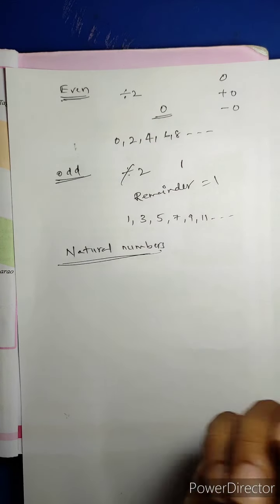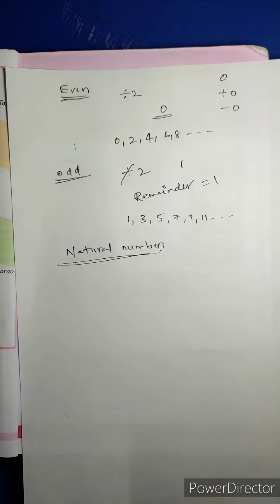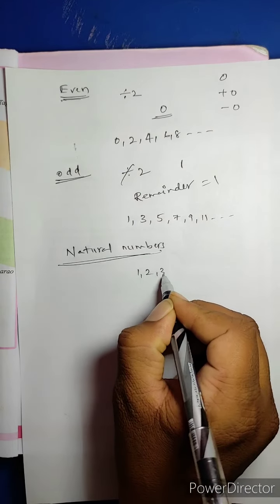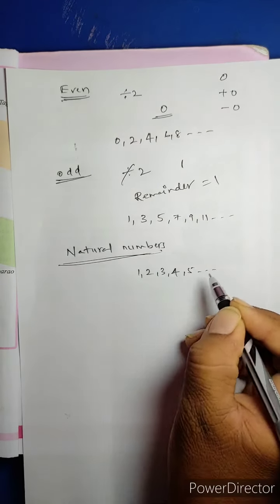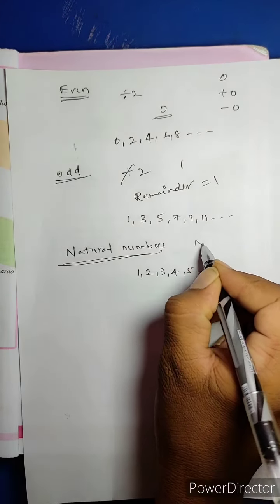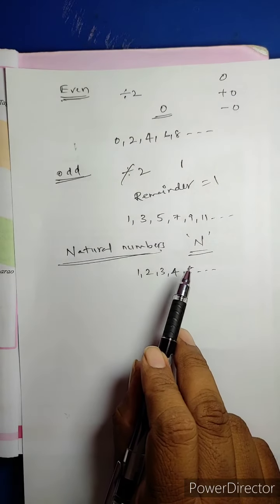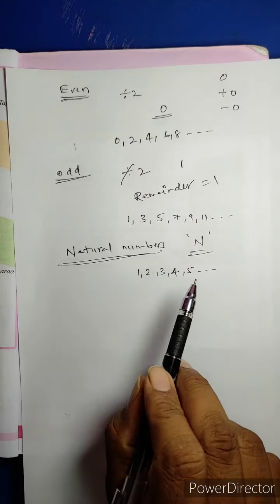How many books are there on that bench? 1, 2, 3, 4, 5, and so on — these are called Natural Numbers. The set of Natural Numbers is denoted by capital N, meaning capital N represents Natural Numbers.